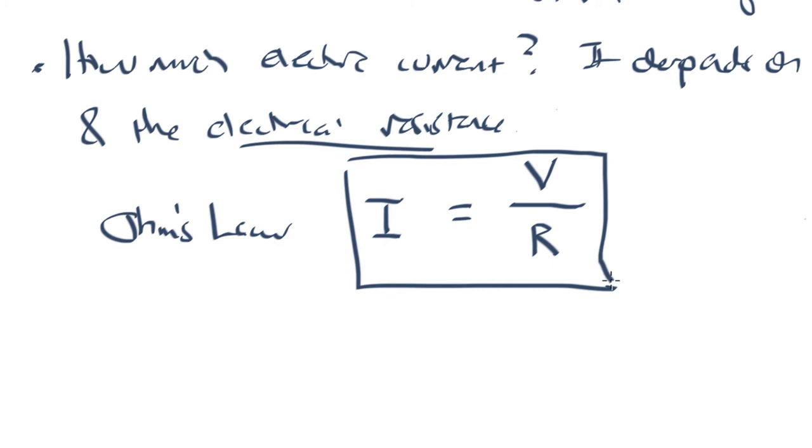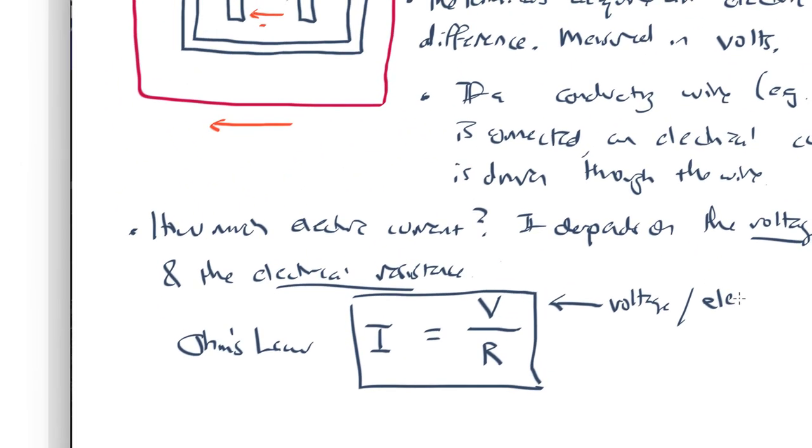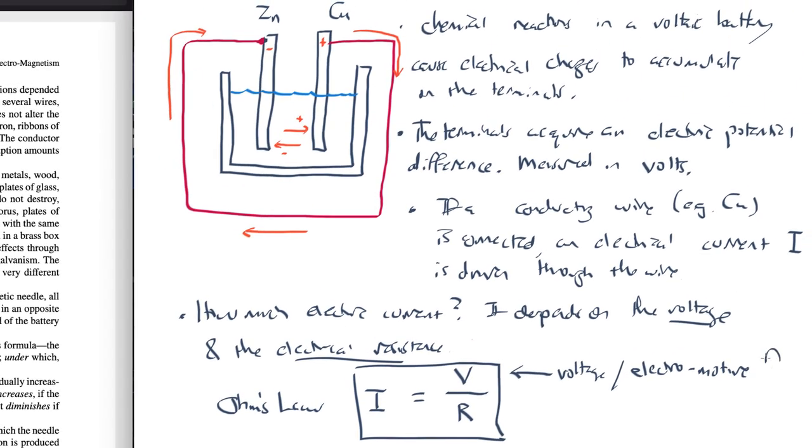So this is Ohm's Law. Sometimes it's written as V equals I R. Here I'm writing it as I equals V over R. So this is, you might think of this voltage, or electric potential, it's sometimes called the electromotive force. You can see there, electromotive force, there's the word electro, it's a force that tries to move electrical currents. And again, it depends on the properties of the battery itself. Whereas this is the electrical resistance of the wire.